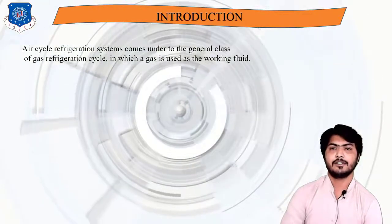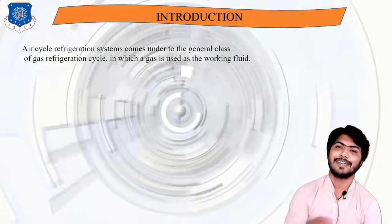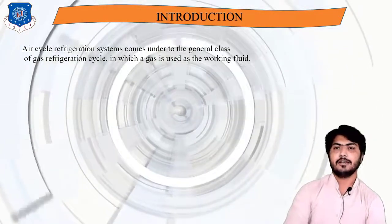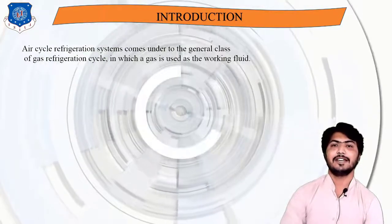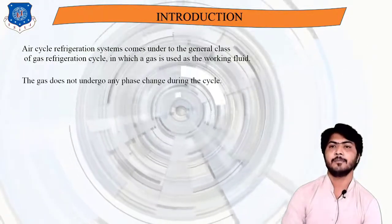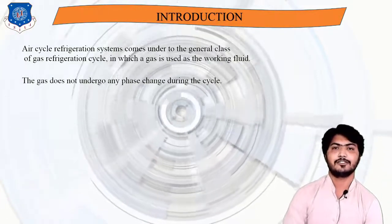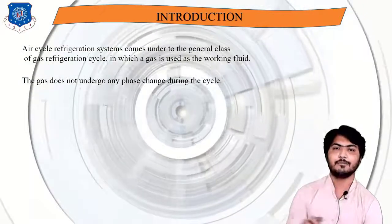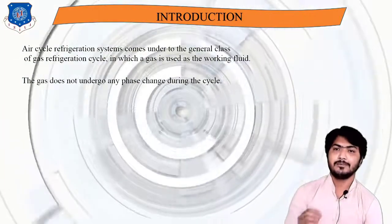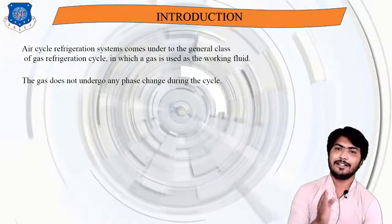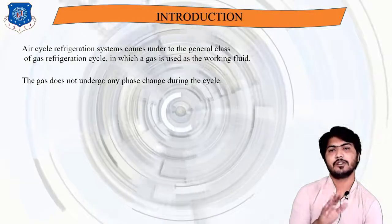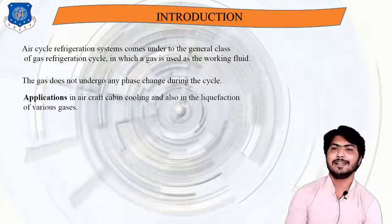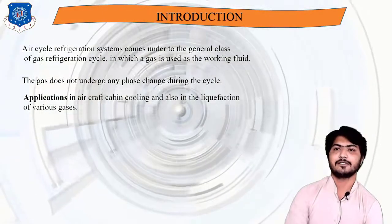The air refrigeration cycle system comes under the general class of gas refrigeration cycle because air works as a gas, used as a working fluid. The gas does not undergo any phase change during the cyclic process — meaning no change from liquid to solid, solid to gas, or gas to liquid occurs during the process.